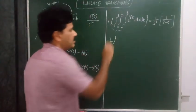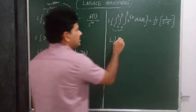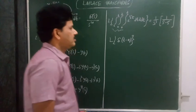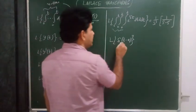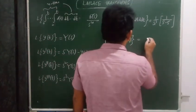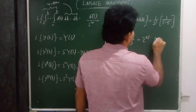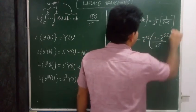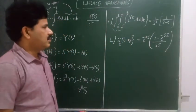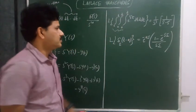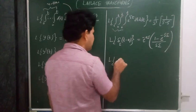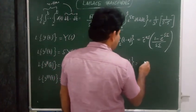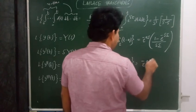Laplace transform of the Dirac delta function: L{δ(t−a)/ε} equals e to the power minus as times (1 minus e to the power minus sε) over sε. The Laplace transform of the Dirac delta function δ(t−a) equals e to the power minus as.